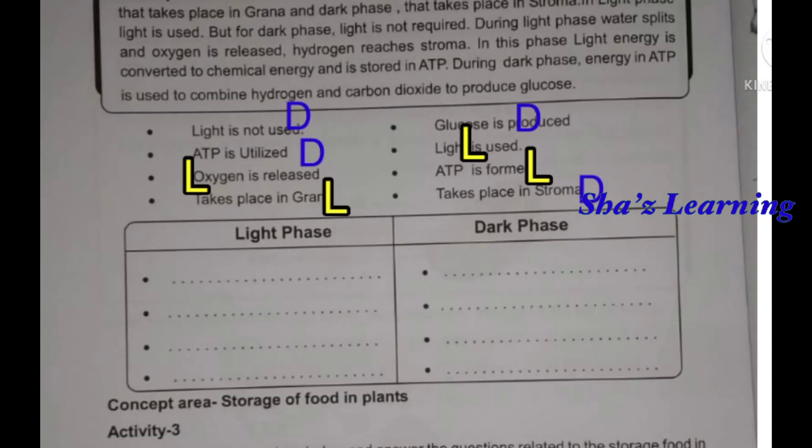So here, D stands for dark phase and L stands for light phase. If you can see it, refer to it as shown in the book. We will continue in the next video.